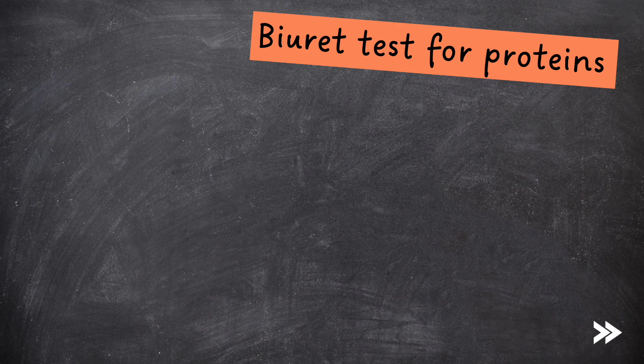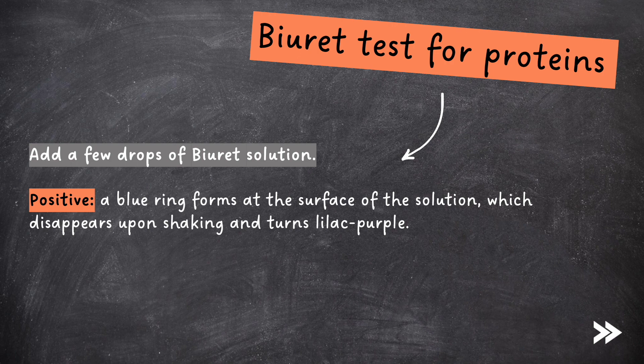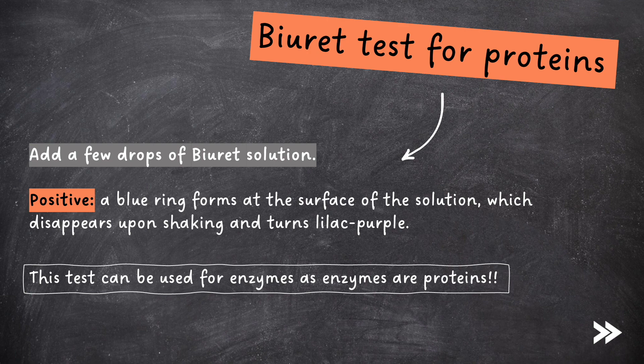Finally, we need to know about the biuret test for proteins. To test for proteins, simply add a few drops of biuret solution. If protein is present, a blue ring will form at the surface of the solution, which disappears upon shaking, and the solution turns lilac purple. Note that the biuret test can also be used for enzymes, as enzymes are proteins.